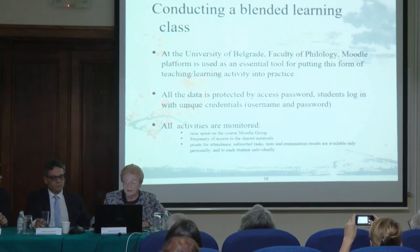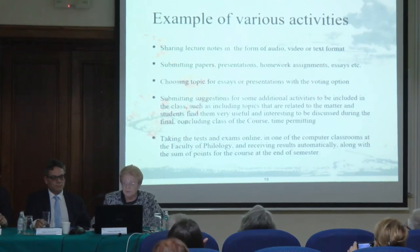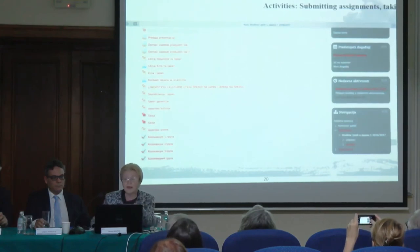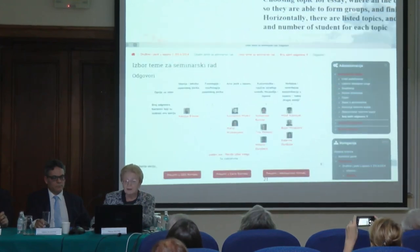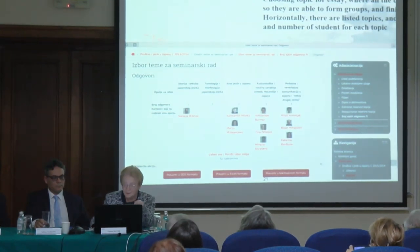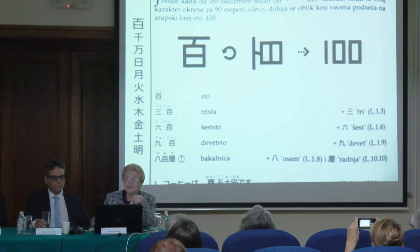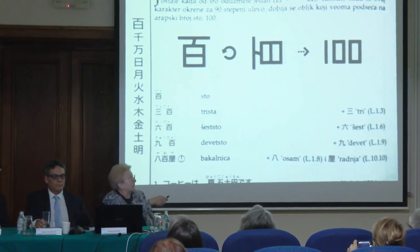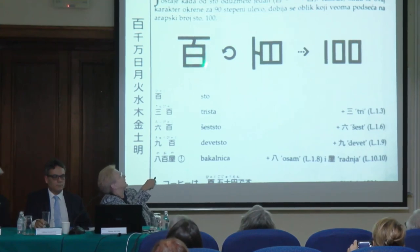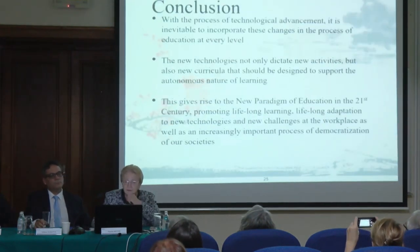This is an example of a blended learning class we have at our faculty — the Faculty of Philology of the University of Belgrade. We share lecture notes, submission of papers, and group work. On a Moodle platform for each subject, we give students topics which are presented here, and they choose them. You have a picture of each of them. We monitor how long they are spending on the Moodle group and how they are interacting with each other, producing the works. Through textbooks, we try to teach them Chinese characters — the kanji — by association. This looks like a Western 100 number, and this is the rotation that gives you a hundred in kanji form, in Chinese character form. This is an associative method that helps teaching and the load of blended learning.